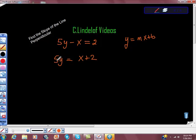I'm going to divide the whole thing because I have 5 times y. I don't want 5 times y, I just want y by itself. So I'm going to divide the whole thing by 5.